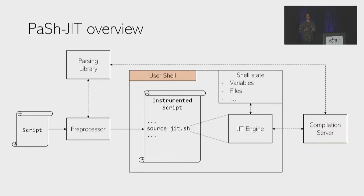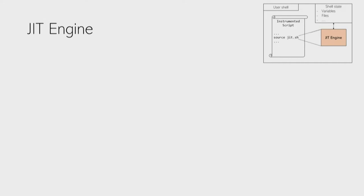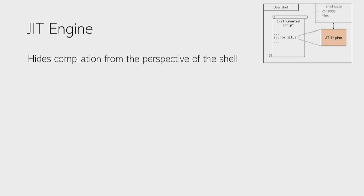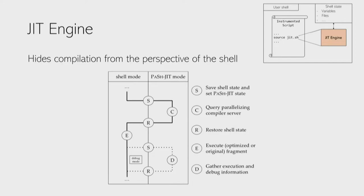Let's zoom in on the JIT engine. Its goal is to hide the compilation from the perspective of the shell. It first saves the shell state and enters a PaSh state, then queries the parallelizing server to compile the potentially parallelizable fragment, records the shell state, and executes either the optimized parallel version or the original if parallelization failed. This makes PaSh highly compatible because from the shell's perspective nothing has changed. There are many tiny details covered in our paper.